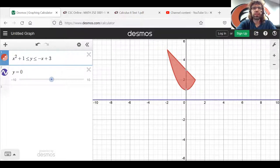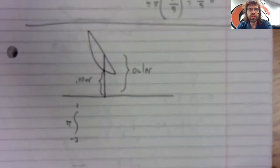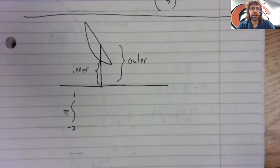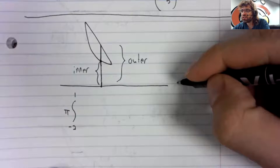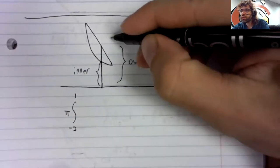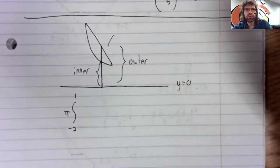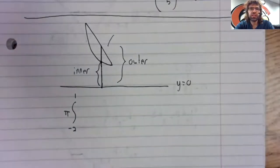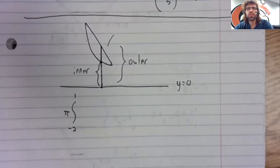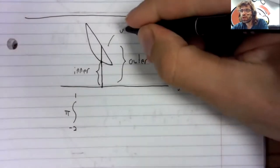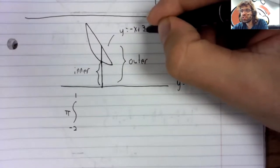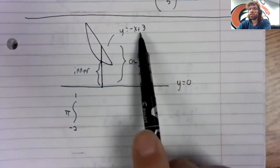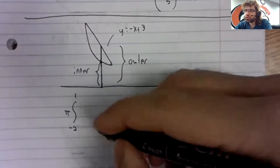Back to the document camera. The outer radius squared. Okay, this is y equals zero. This is y equals negative x plus three. So negative x plus three minus zero.